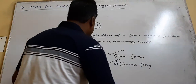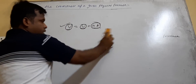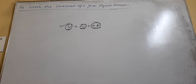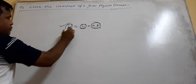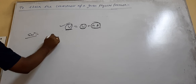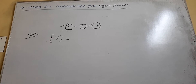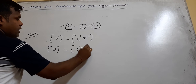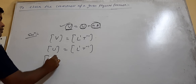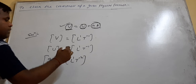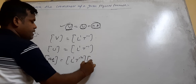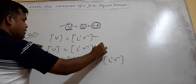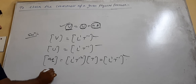So let us solve this formula to check whether it is correct or not. If the dimensions of each term are same, then the formula is dimensionally correct. Here, one term is V — final velocity — dimensional formula L¹T⁻¹. U is initial velocity, L¹T⁻¹. If T is acceleration, the dimensional formula is L¹T⁻². And T is time, that is T, which gives L¹T⁻¹. You see, the dimensions of each term are same, so the formula is dimensionally correct.